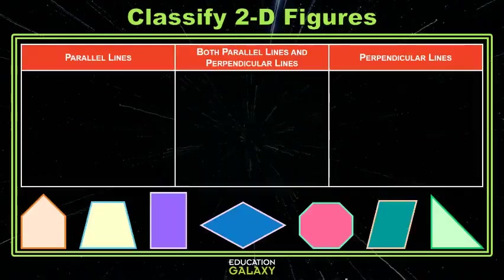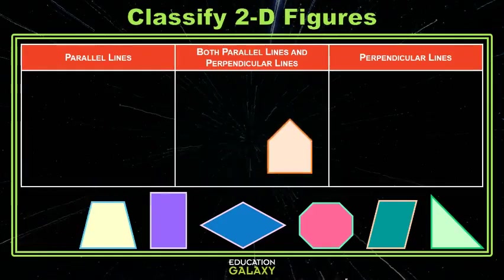Now let's look at lines in figures. Remember, parallel lines do not touch and perpendicular lines intersect at a right angle. So that first figure, the pentagon, does appear to have both parallel and perpendicular lines. You'll see the parallel lines here, and then perpendicular lines here, and here, and maybe even here.